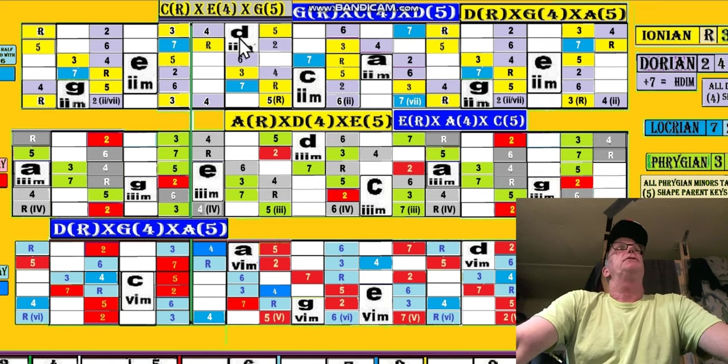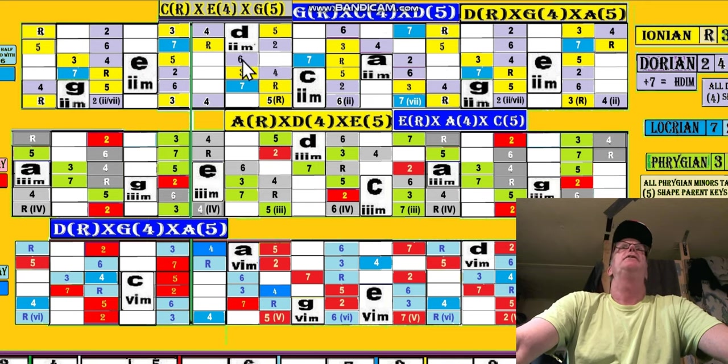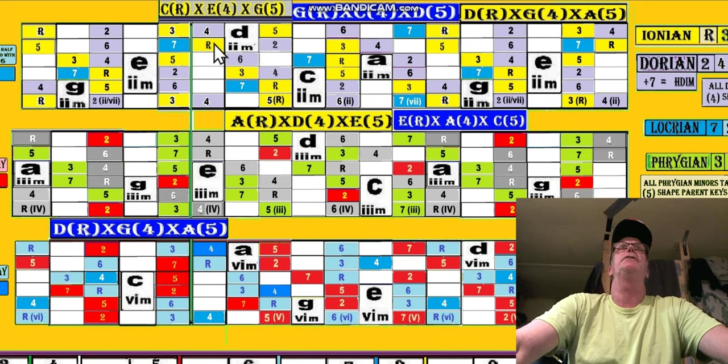But then we have the minors here, and we've added in this D minor to the Dorian. The yellow aeolian does not have a minor associated with it. That's read it straight off the chart.